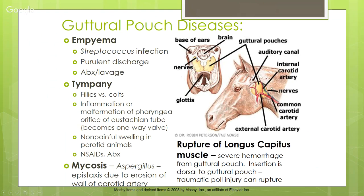Another cause of major bleeding is rupture of the longissimus capitis muscle. Horses can rear up in an enclosed space and strike the pole of their head with such force that it ruptures the muscle, can fracture the skull, and that traumatic poll injury can rupture the external carotid artery due to damage to the guttural pouch.